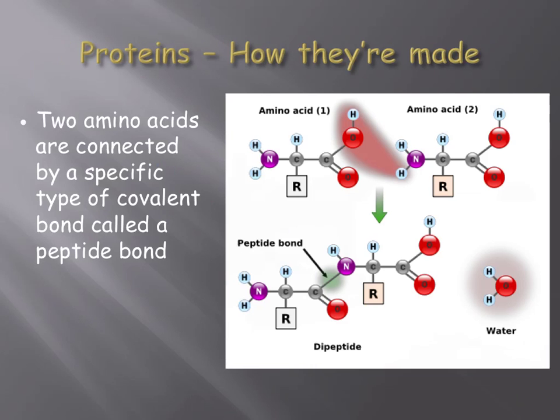The process by which amino acids come together in a synthesis reaction to form a protein is rather complex, and it will be discussed later in a video entitled Translation. For now, what's important to note is that when amino acids come together to form a protein, they are connected by a specific type of covalent bond called a peptide bond. This is why proteins are sometimes referred to as polypeptides — there are many, or poly, peptide bonds connecting amino acids, as illustrated in the image to the right.